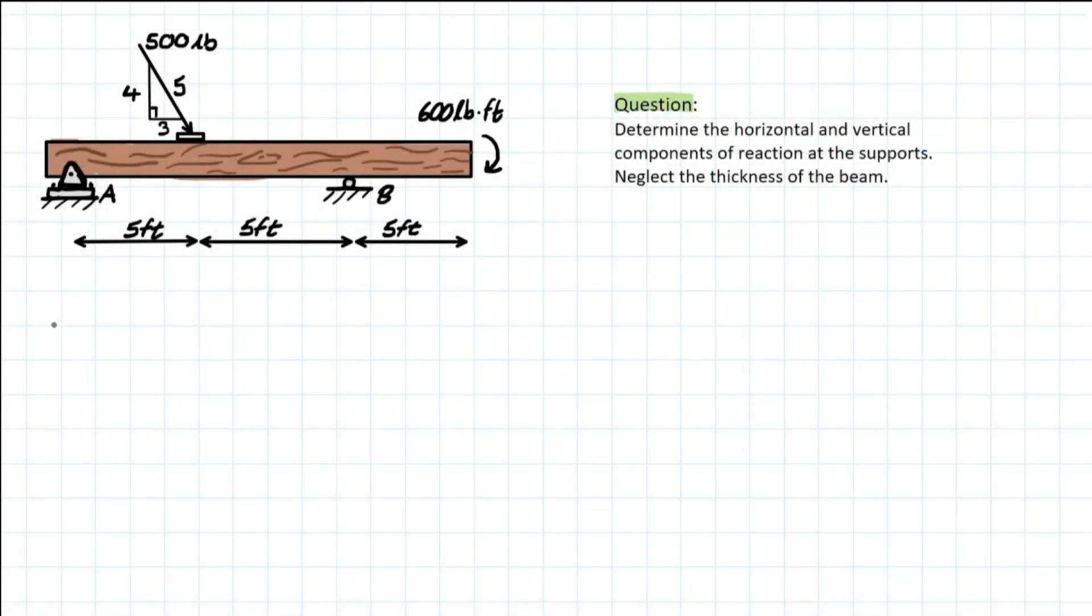Hello everybody, today we're going to be dealing with the equilibrium of a rigid body. This is going to be the first problem that I deal with for you guys just to show the basics of what you're going to need to know. So the problem goes, determine the horizontal and vertical components of reaction at the supports. Neglect the thickness of the beam.